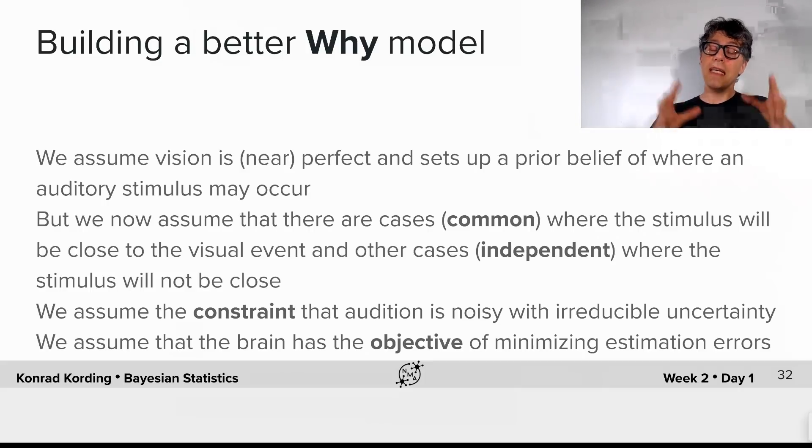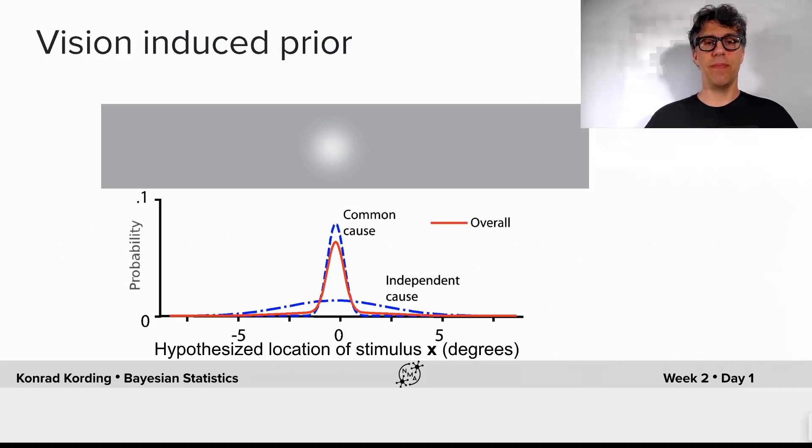But what you see is it's almost the same model. It's just we take one part where we did a strong simplifying assumption that the two things always belong together. And now we relax that assumption.